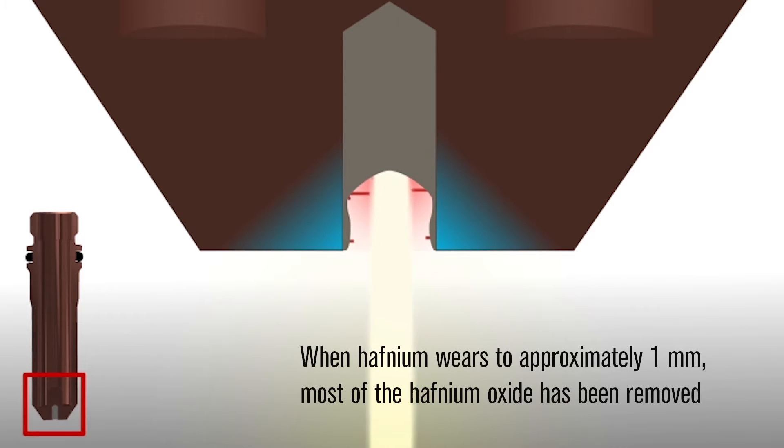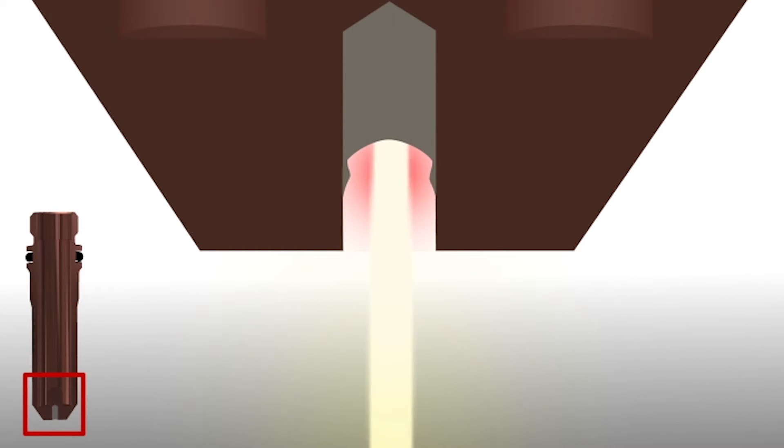When the hafnium wears to approximately one millimeter, most of the hafnium oxide has been removed from the electrode walls, exposing the copper to the heat of the plasma arc. The heat generated by the arc melts the copper, and if enough copper melts, catastrophic failure of the electrode and nozzle can result.